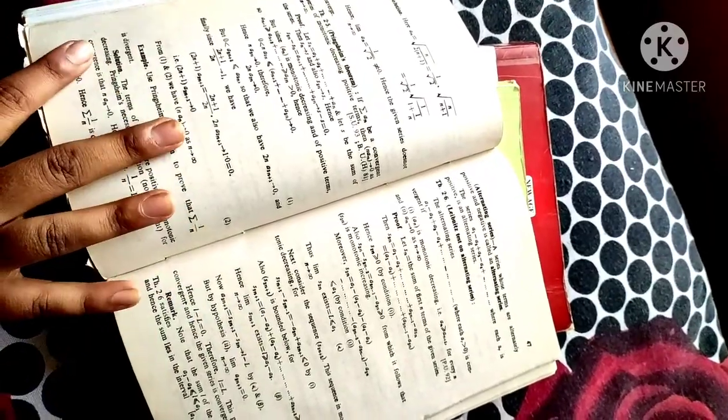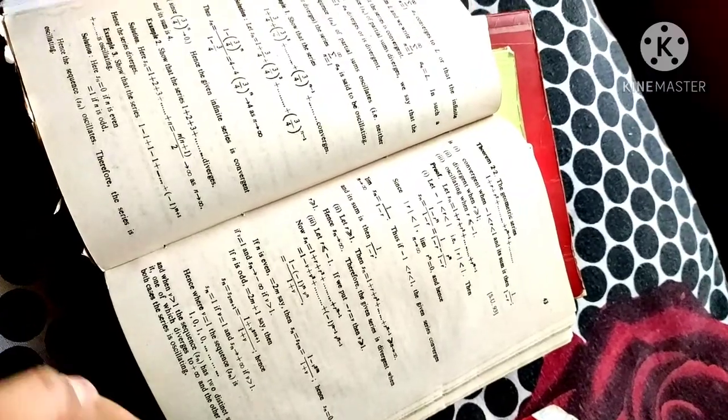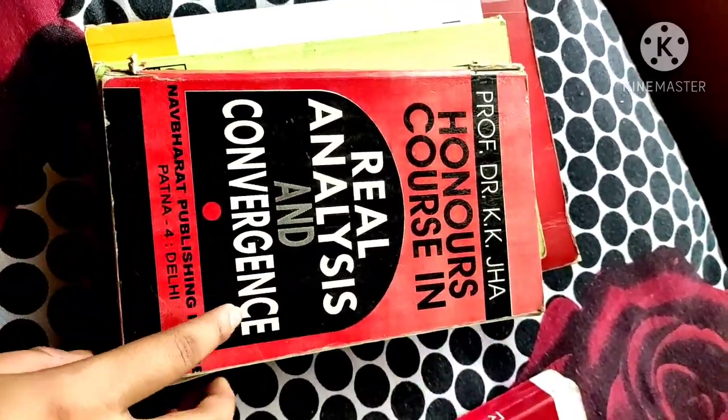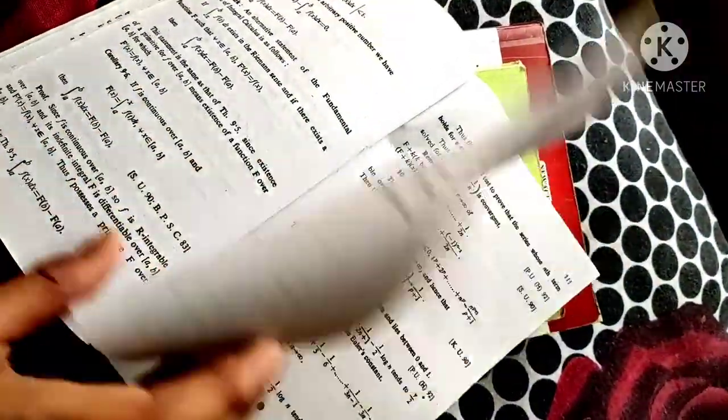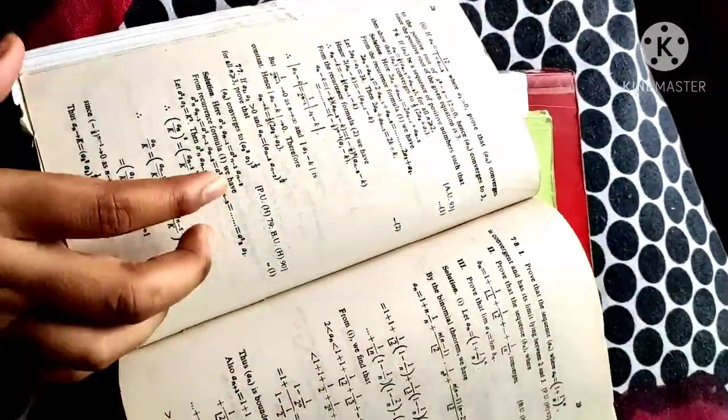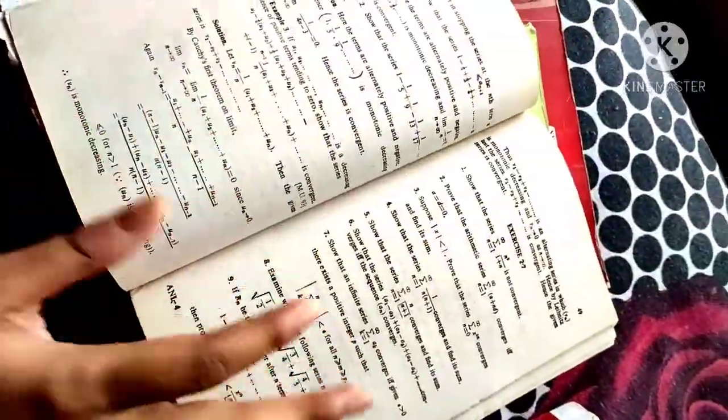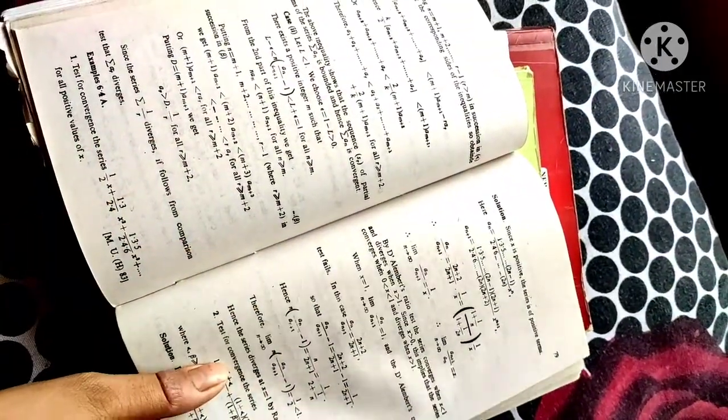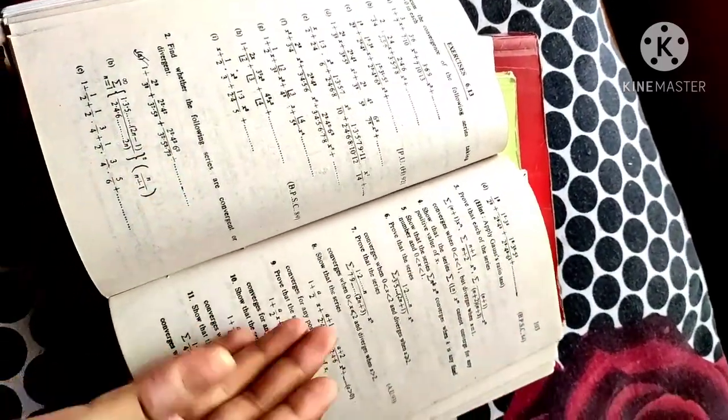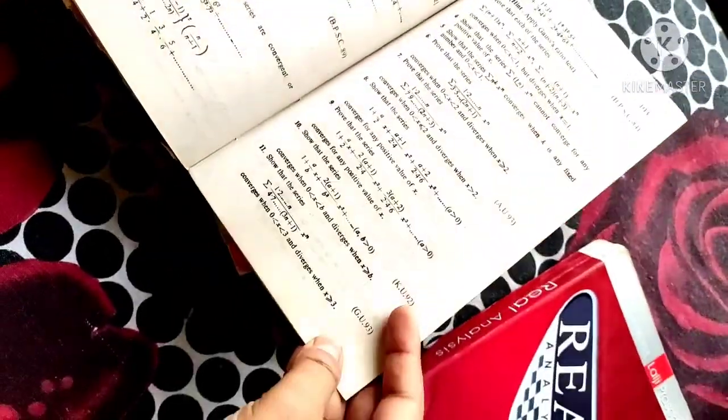If you want to read the sequence and series, then I will prefer this book, Professor Dr. K.K. Jha Real Analysis and Convergence. Especially the chapter sequence and series are very well discussed in this book. I read this book at my time and awesome, every explanation and examples are very great over there. You can see lots of examples and theorems are there, lots of numericals are given for practice work. There is also previous year questions.